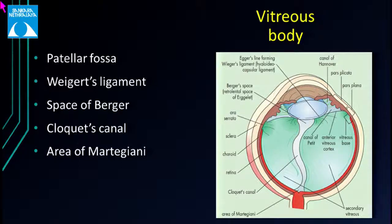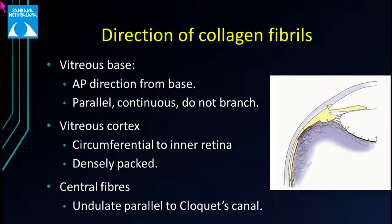There is a potential space called the space of Berger behind Weigert's ligament, which continues as Cloquet's canal in a sinuous manner throughout the central vitreous cavity and ends just above the disc in the area of Martegiani. The collagen fibril direction is also important: at the vitreous base, fibrils run radially in an anteroposterior direction, are parallel, continuous, and do not branch. In the vitreous cortex, these fibrils become circumferential to the inner retina and are densely packed, while central fibrils undulate parallel to Cloquet's canal.